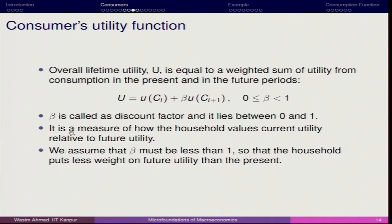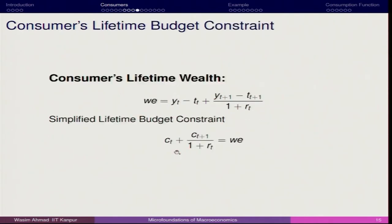Beta is called the discount factor and it lies between 0 and 1. It measures how the household values current utility relative to future utility — whether the representative agent should save more in the current period for the future or utilize all income in the current period itself. We assume beta must be less than 1. We have already derived the lifetime budget constraint: Ct plus Ct+1 upon 1 plus Rt equals Yt minus Tt plus Yt+1 minus Tt+1 upon 1 plus Rt.